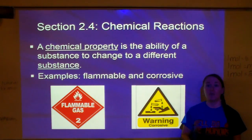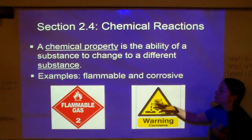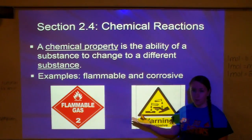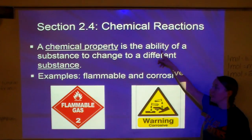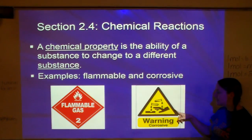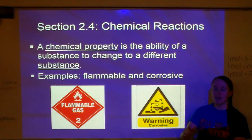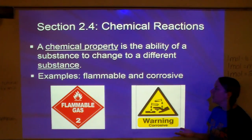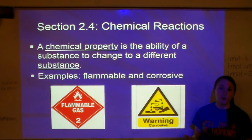We're not actually changing it — we just could. For example, I could say my shirt is flammable. I didn't actually set it on fire, but if I did, it would burn easily. Examples of chemical properties include flammable — something could catch on fire, it has the ability to — and corrosive. Acids are corrosive; if you get acid on your skin, it will start eating through. It means if I put it on my skin, it has the ability to be corrosive. Those are examples of chemical properties.